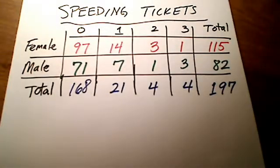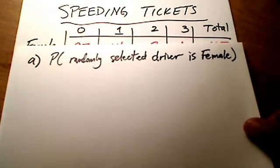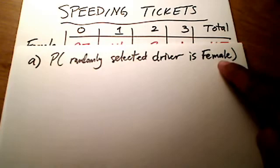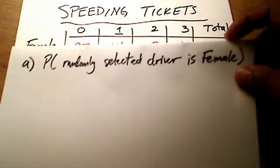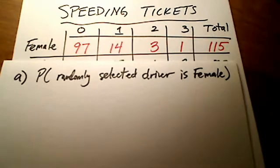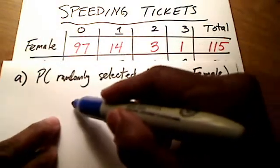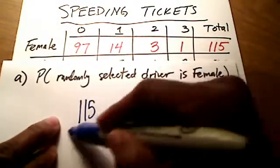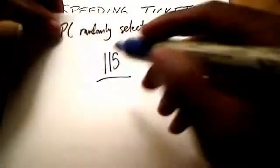Here's our first question: can you find the probability that we randomly select a driver and the driver is female? That's not so bad. First, how many female drivers were there? 115 female drivers. So we'll put 115 on top over our total number of drivers, which is 197.